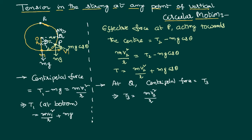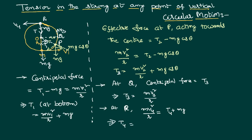Now suppose there is a point R at the top, where the body moves with velocity V4. At the top, the weight acts downward and the string tension also acts towards the point of suspension, which is towards the center. So at point R, the centripetal force Mv4² / R equals the effective force towards the center, which is T plus Mg — both acting towards the center and thus treated as positive. Therefore, tension at the top is T = Mv4² / R − Mg.